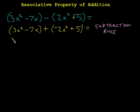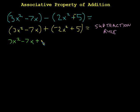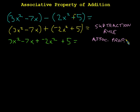The next thing is to throw away the parentheses. I had to change to addition first because the associative property only works for addition. So now I can throw away the parentheses and get: 3x squared minus 7x plus negative 2x squared plus 5. The justification for that step is the associative property.